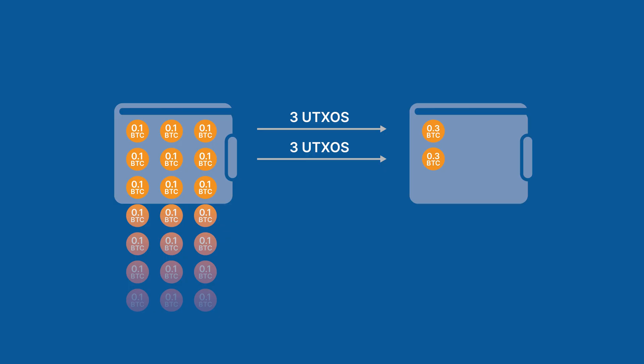But if you need to move your Bitcoin and are running into signing constraints, you can always try moving your Bitcoin in several smaller transactions. If you only send a portion of your UTXOs at a time, your device may have better luck handling the data and providing signatures.